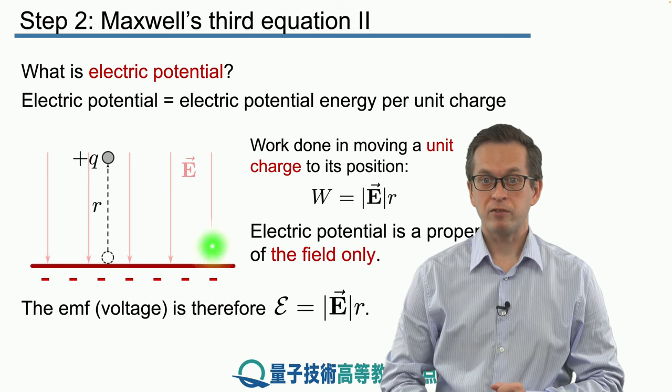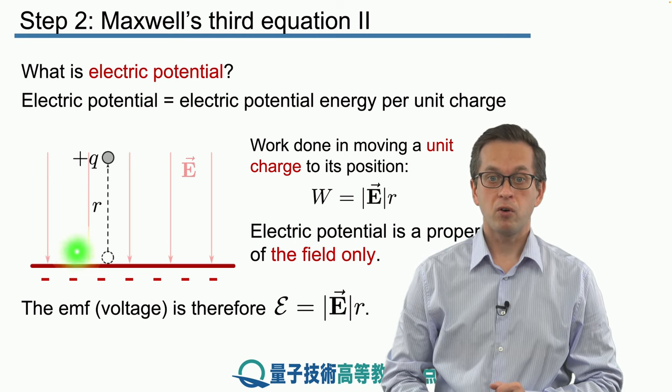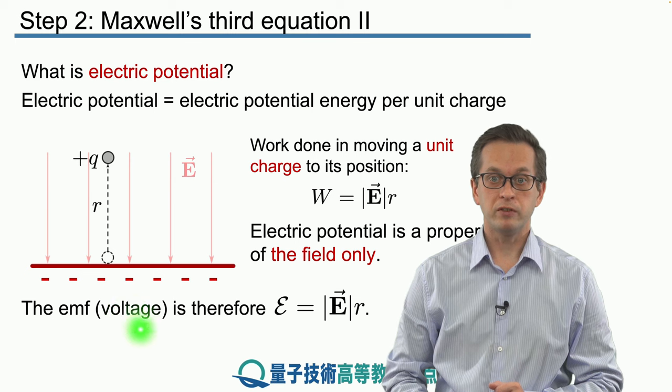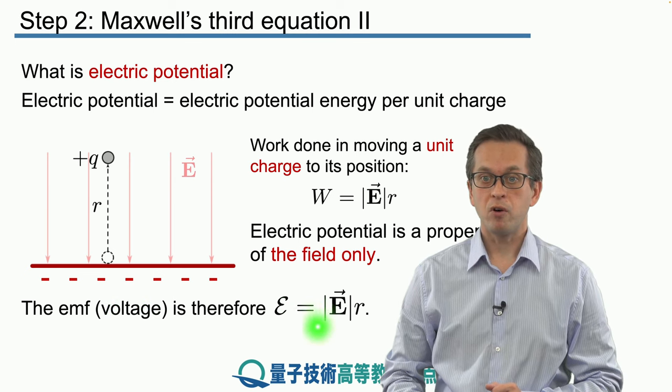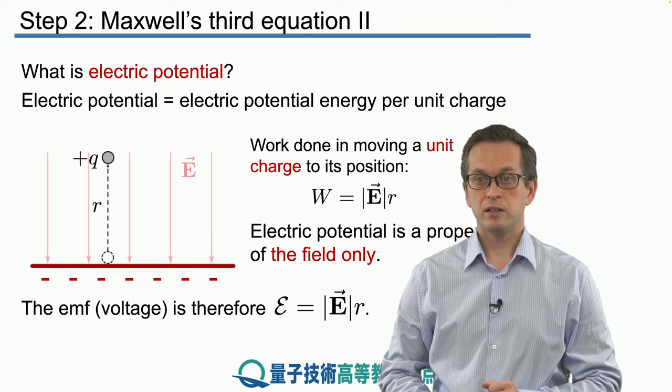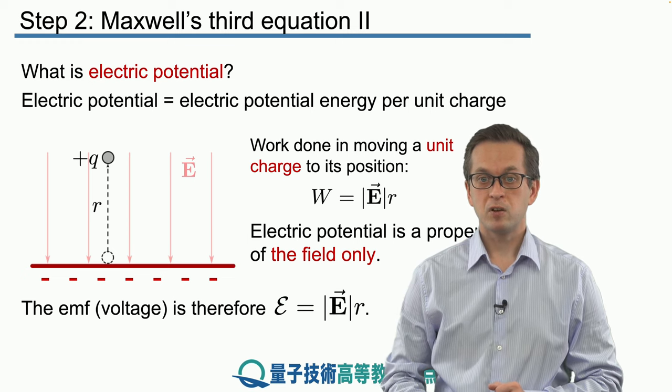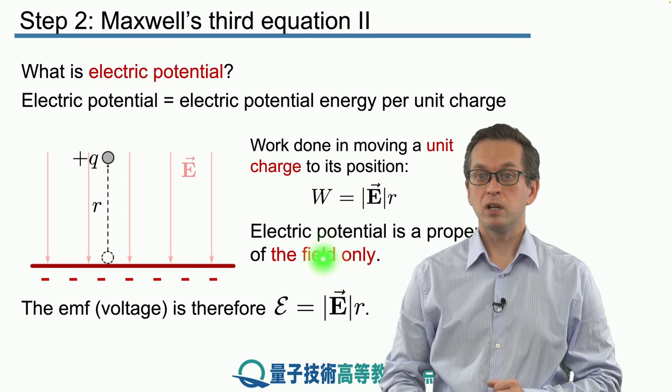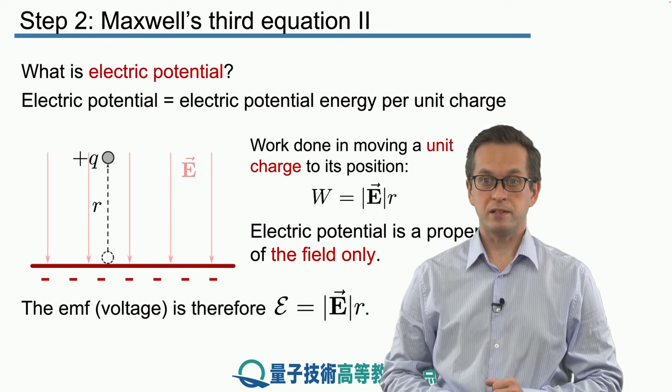And that way we have arrived at an expression for the EMF or the potential difference in terms of only the electric field and some distance r. So we say that the EMF is equal to the magnitude of the electric field times the distance.